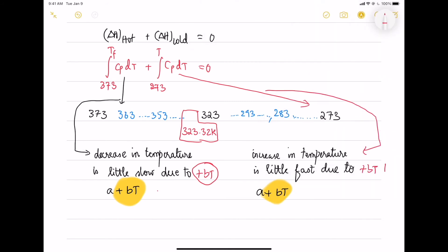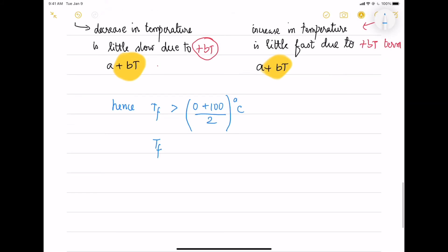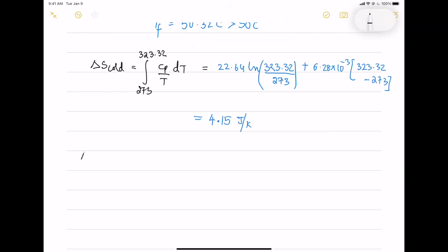This plus B T term is the main reason that is causing this difference in the expected final temperature. Now, we will find out the entropy due to this heat transfer. This is not a quasi-static or a slow process transfer. This is a fast transfer, so that's why there will be some entropy created positive.